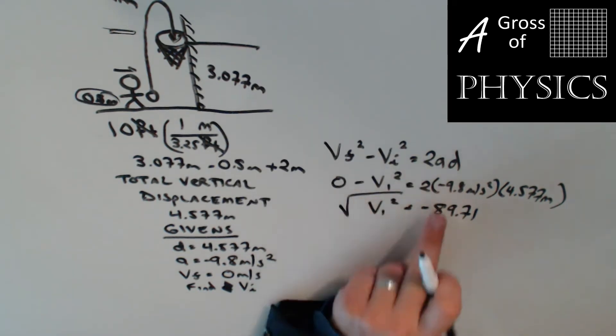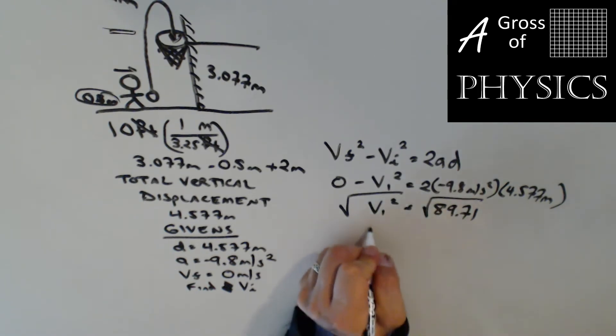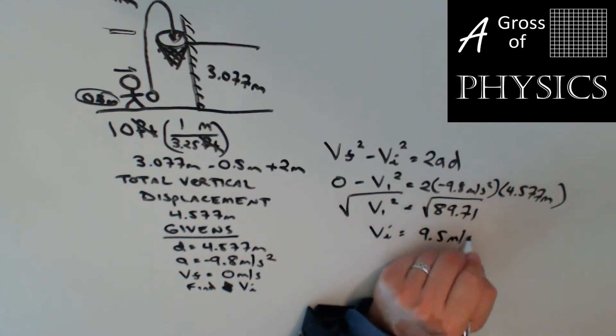The negatives will just cancel, so square root of both sides. Second function, second answer. And I'm getting an initial velocity of 9.5 meters per second.